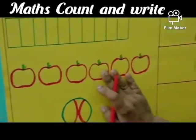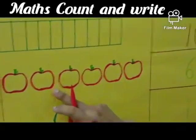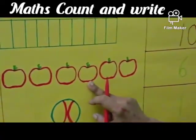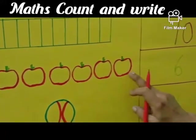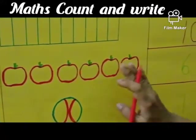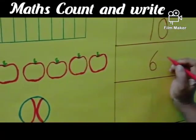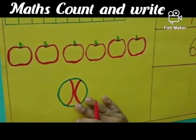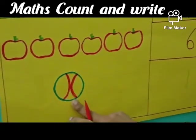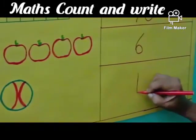How many apples are there? Come, let's count — 1, 2, 3, 4, 5, 6. How many apples are there? 6 apples, so you should write 6. How many balls are there? Only 1 ball. So write there 1.